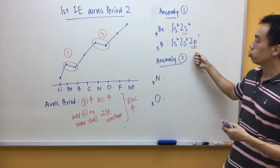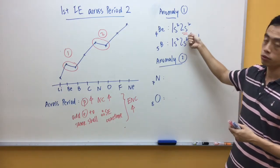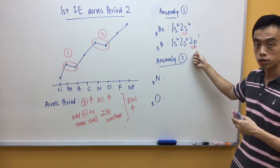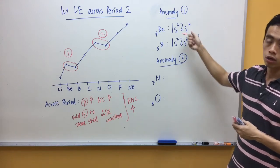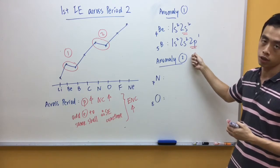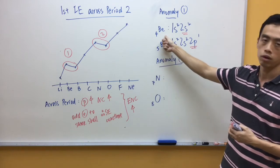Now, what you notice is 2p subshell is further away from the nucleus than my 2s subshell, or you can say that 2p subshell has a higher energy than my 2s subshell. So, therefore, it requires less energy for me to remove the electron from 2p subshell, so boron would have a slightly lower first ionization energy than beryllium.